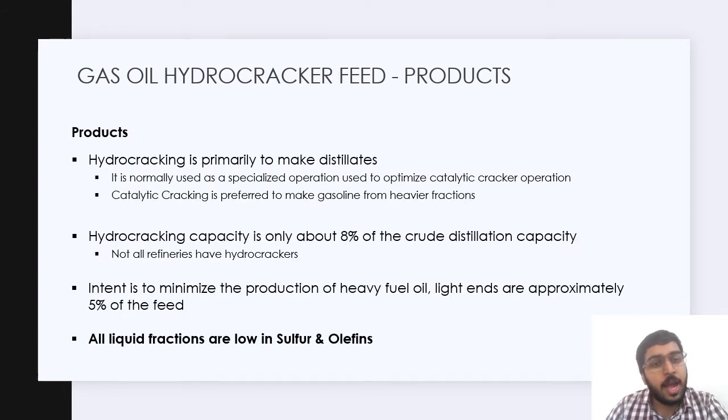We have analyzed the gas oil hydrocracker feed, now let's analyze the products. Hydrocracking is primarily to make distillates. It is normally used as a specialized operation to optimize catalytic cracker operation. Catalytic cracking is preferred to make gasoline from heavier fractions. Hydrocracking capacity is only about 8% of the crude distillation capacity, and note that all refineries do not have hydrocrackers. The intent is to minimize the production of heavy fuel oil, and light ends are approximately 5% of the feed. The major point is that all liquid fractions are low in sulfur and olefins, which is a very good point.